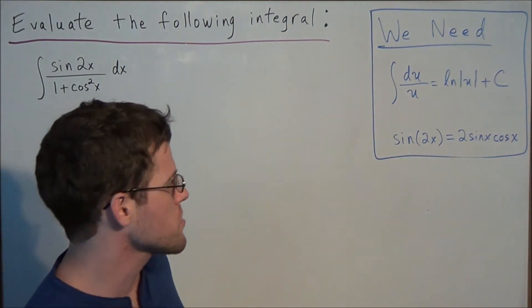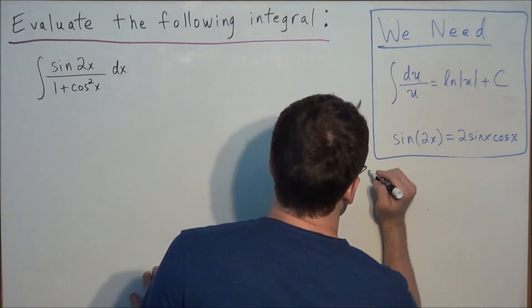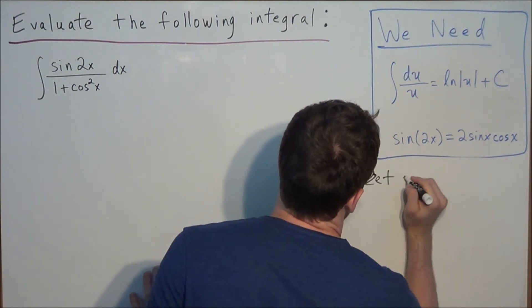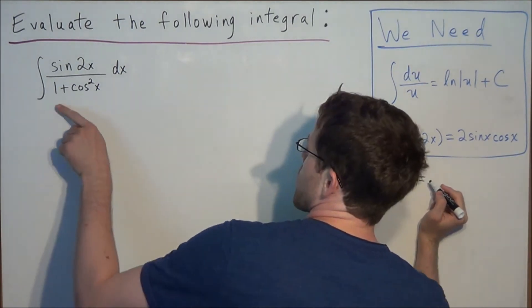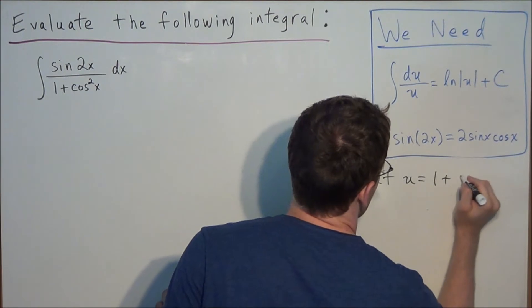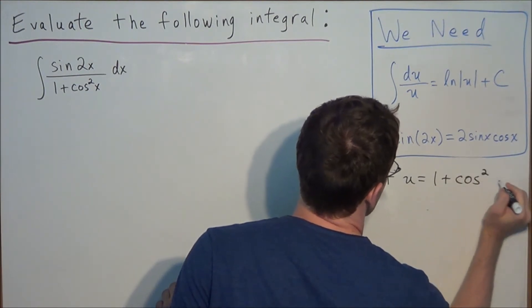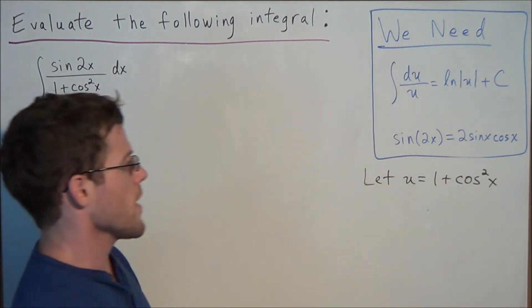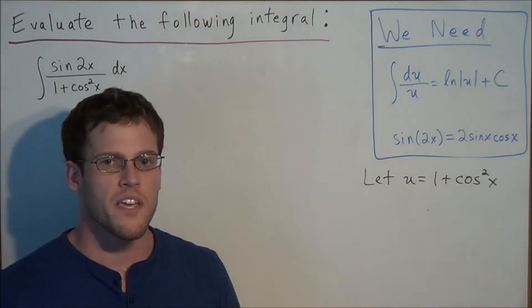So for this problem, the first thing we could do is let u equal 1 plus cosine squared x. Now, at this step, because we're making a u substitution, we're going to have to find the derivative of 1 plus cosine squared x.